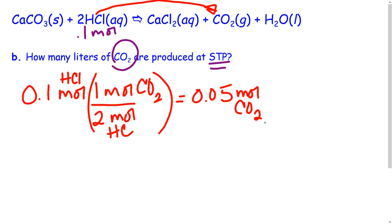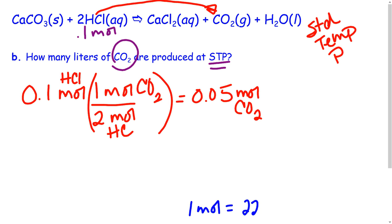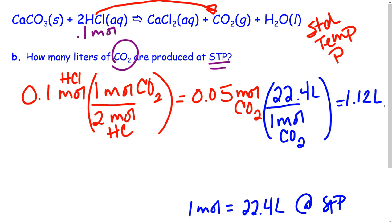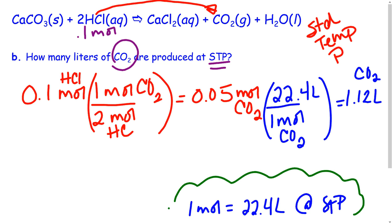Now for STP: STP stands for standard temperature and pressure. There is a key conversion that says in every 1 mole there are 22.4 liters at STP. We tack this onto the end of our factor label chain. So for carbon dioxide, 1 mole equals 22.4 liters at STP. Taking 0.05 moles and multiplying by 22.4 gives us 1.12 liters of carbon dioxide. Make sure you have that 22.4 L/mol conversion written down.